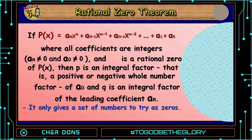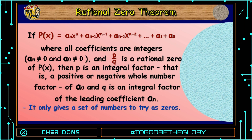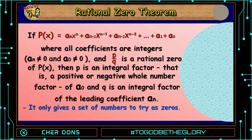Rational Zero Theorem: if p of x equals A sub n times x raised to n plus A sub n minus 1 times x raised to n minus 1, and so on, plus A sub 1 plus A sub 0, where all coefficients are integers, A sub n and A sub 0 are not equal to zero, and p over q is a rational zero of p of x, then p is an integral factor of A sub 0 and q is an integral factor of the leading coefficient A sub n. Note that it only gives a set of numbers to try as zeros. Let's have an example applying the Rational Zero Theorem.